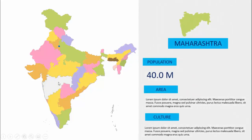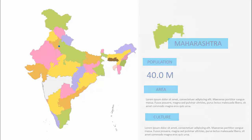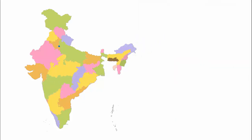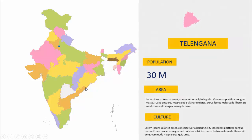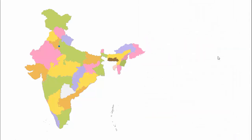For example, when I click you can see Maharashtra — the map of Maharashtra comes down here, and you can add the population, area, culture, and any other details of your choice. When I click it goes back again, and on my next click a different state will come — in this case Telangana. When I click it goes back. Likewise you can do similar things for all Indian states.